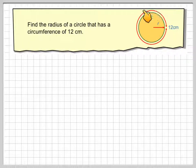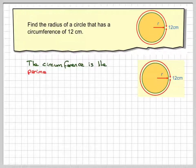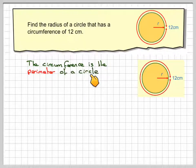The circumference is the distance all the way around the outside of a circle. So the circumference is the perimeter of a circle.